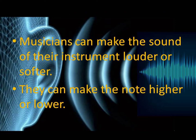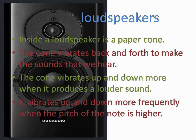Musicians can make the sound of the instrument louder or softer, and they can make the note higher or lower. To understand more about loudness and pitch, let us take an example of loudspeakers. Inside a loudspeaker is a paper cone. The cone vibrates back and forth to make the sounds that we hear. The cone vibrates more when it produces a louder sound, and it vibrates more frequently when the pitch of the note is higher.